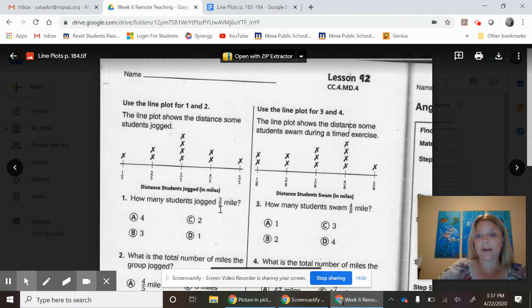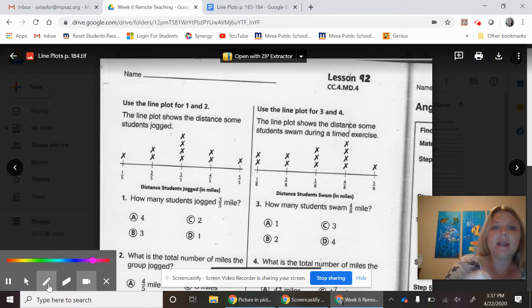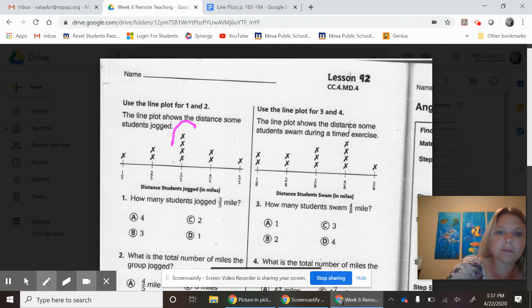They want to know how many of them jogged the three-eighths. That's a little bit different - it would only be these people right here. How many of those are there? How many X's do you see? You see four, so you know the answer is A.